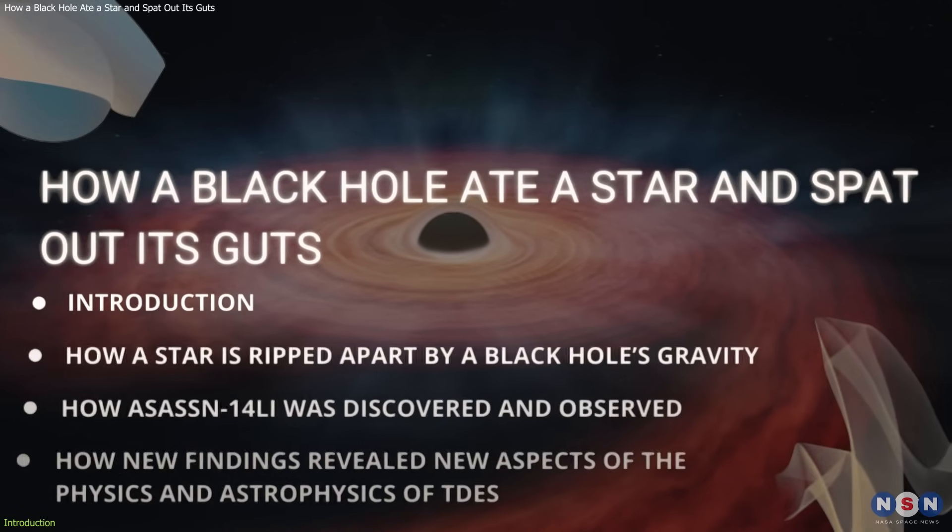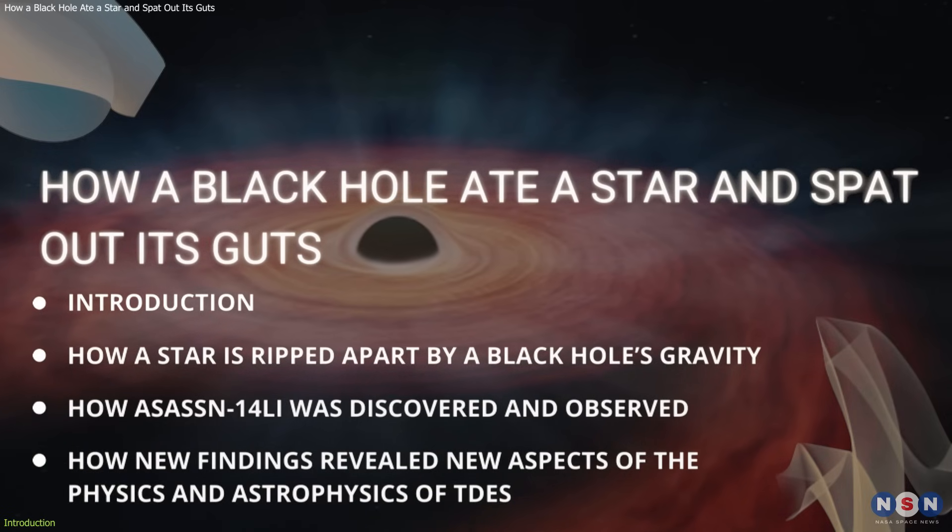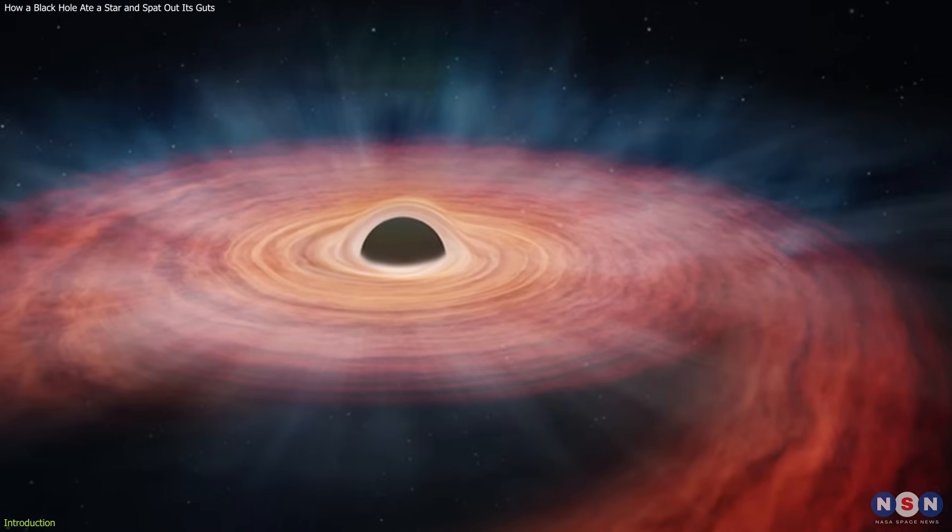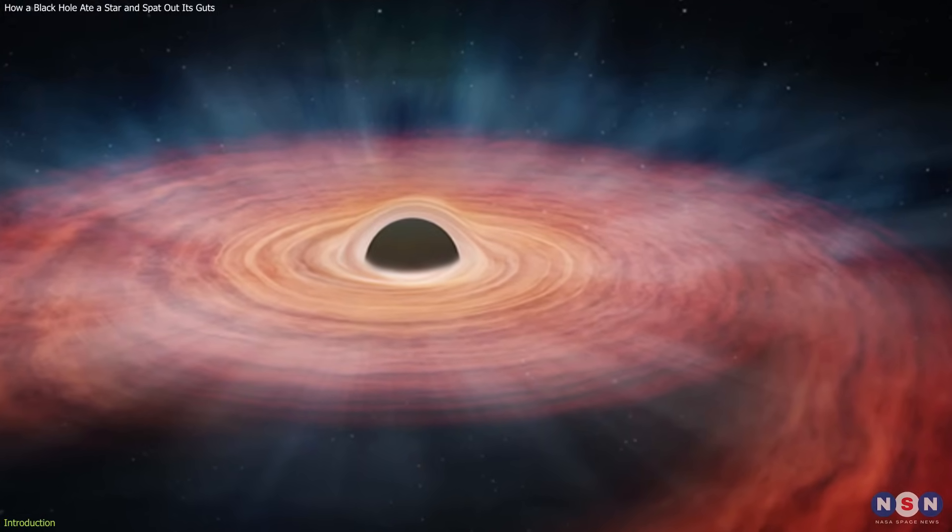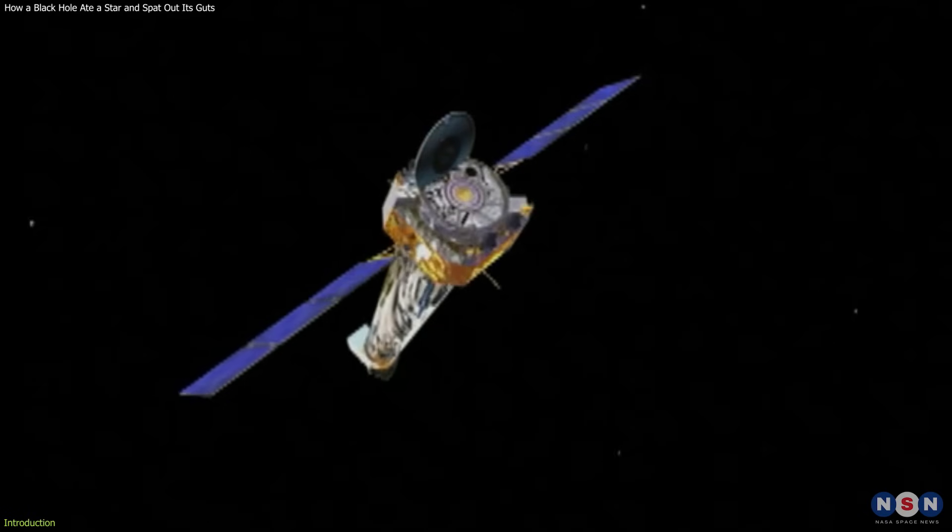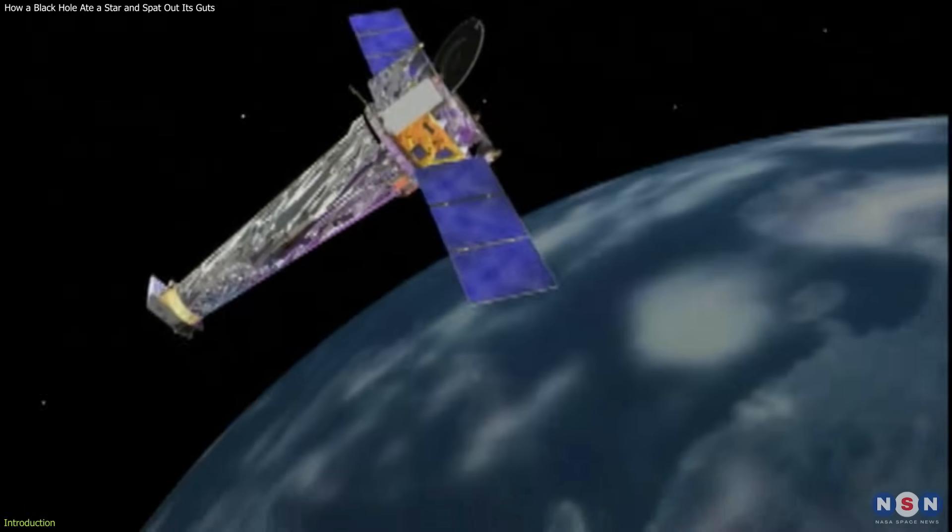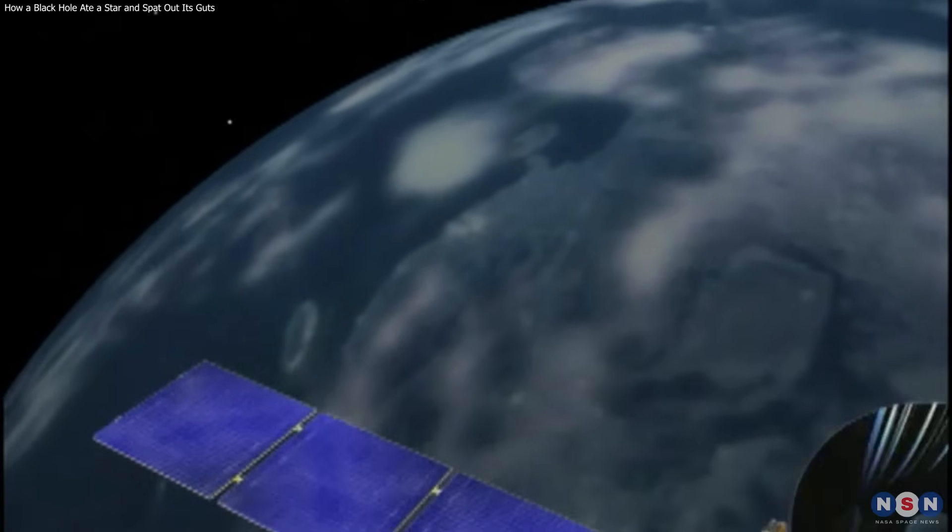In this video, we will discuss one of the most remarkable examples of a tidal disruption event that has been observed so far, ASASN-14Li. This event occurred when a supermassive black hole devoured a huge star and spewed out its guts into space. We will see how astronomers have been studying this event with various telescopes and what new discoveries they have made.